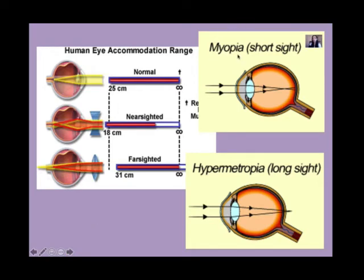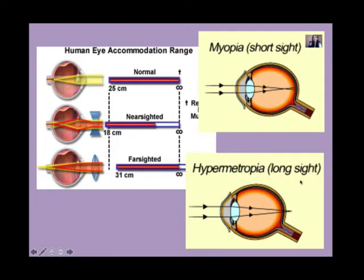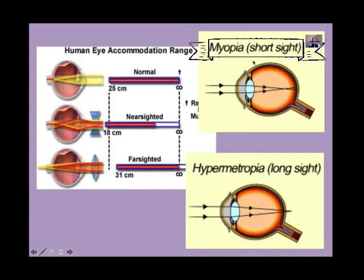Myopia means short-sightedness, or near-sightedness, or near vision. Hypermetropia means long-sightedness, or distant vision, or far-away vision. So myopia is short-sightedness and hypermetropia is long-sightedness.